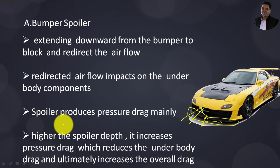The spoiler mainly produces pressure drag. There are different types of drag when a vehicle moves at high speed: form drag, pressure drag, and induced drag. The bumper spoiler mainly produces pressure drag. Higher spoiler depth increases pressure drag, which reduces underbody drag but ultimately increases overall drag.